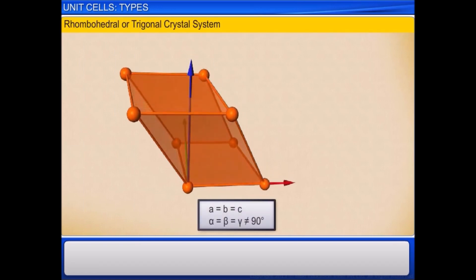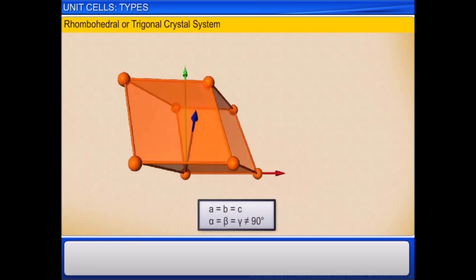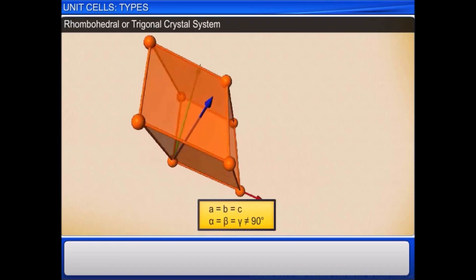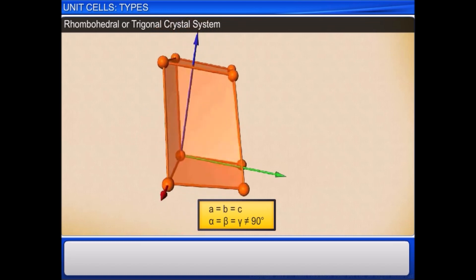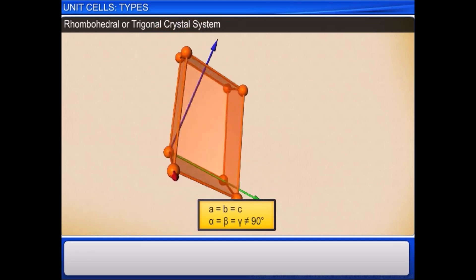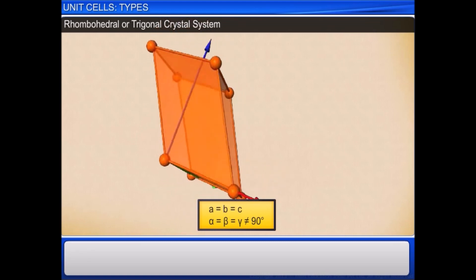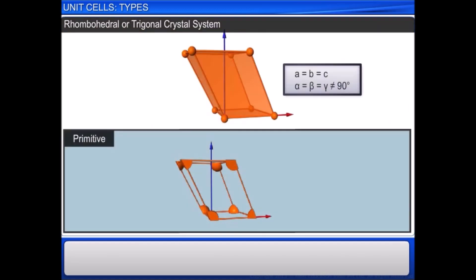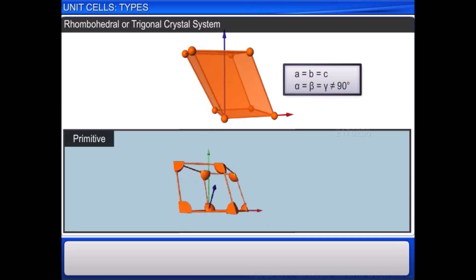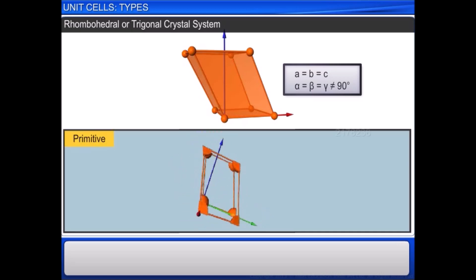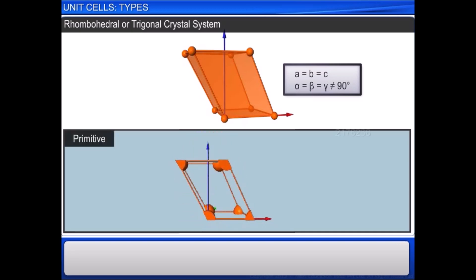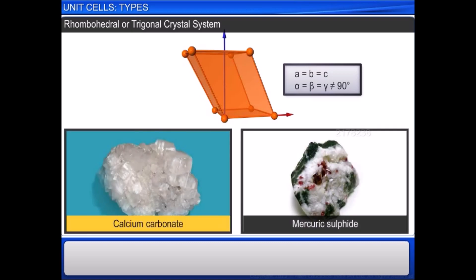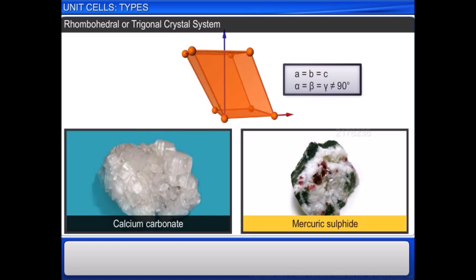In a rhombohedral or trigonal crystal system, the three axes are of equal length and only two angles are of 90 degrees; the third angle is not equal to 90 degrees. The only possible lattice is primitive. Calcium carbonate and mercuric sulfide are examples.